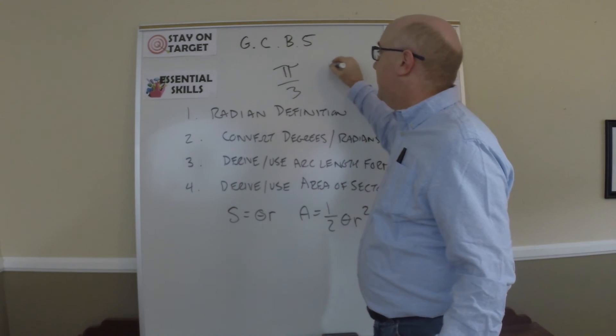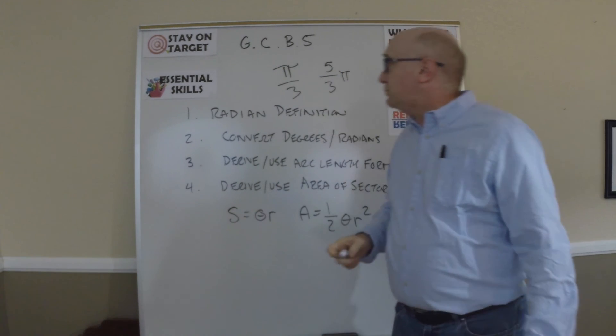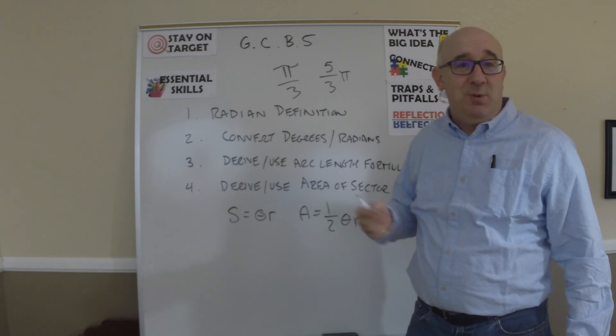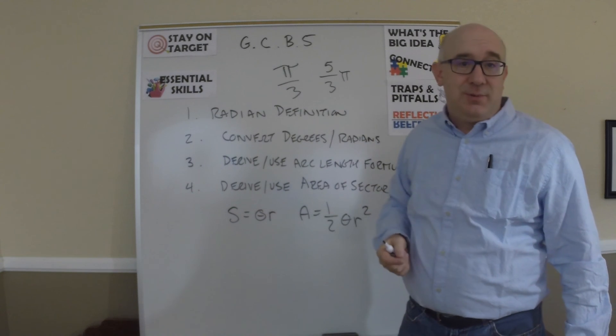So for instance, something like this, again, I know that I am greater than 180 because three-thirds would be 180. I'm less than 360 because six-thirds would be that.